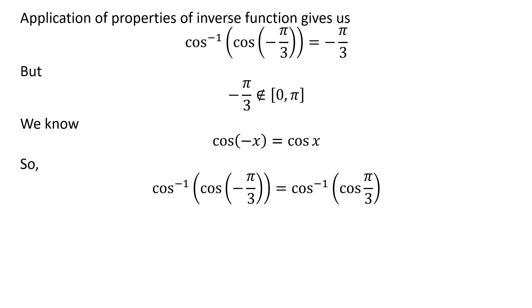Application of the above identity implies cos⁻¹(cos(-π/3)) = cos⁻¹(cos(π/3)).